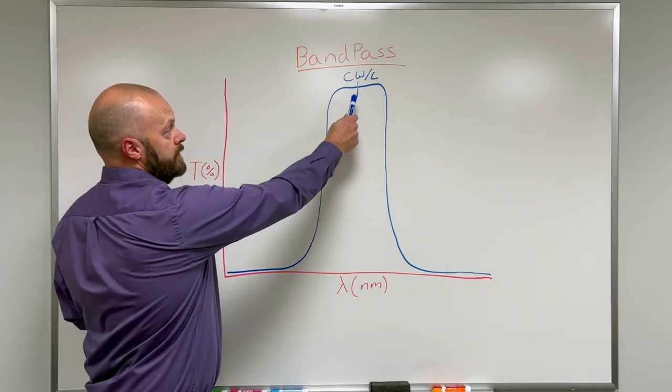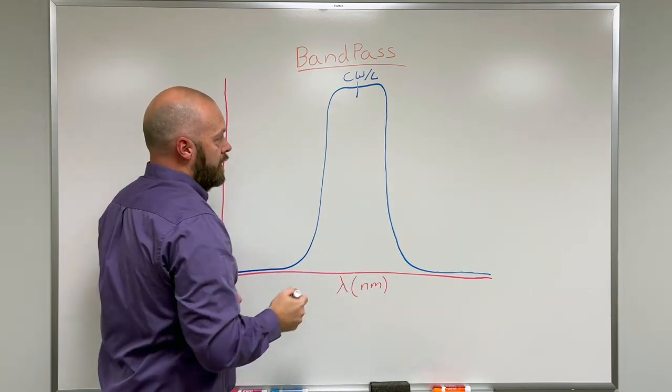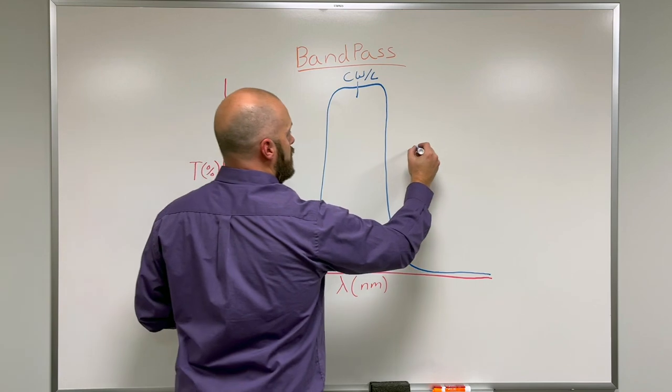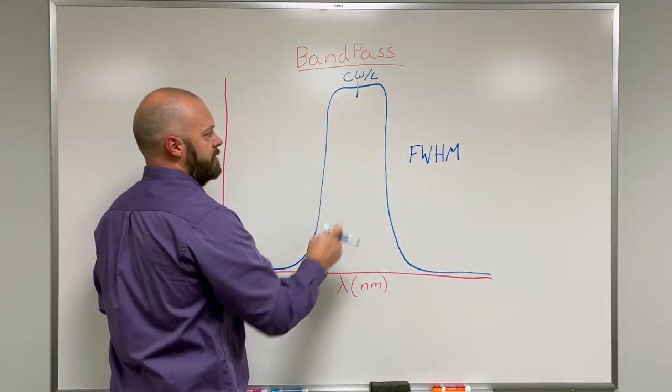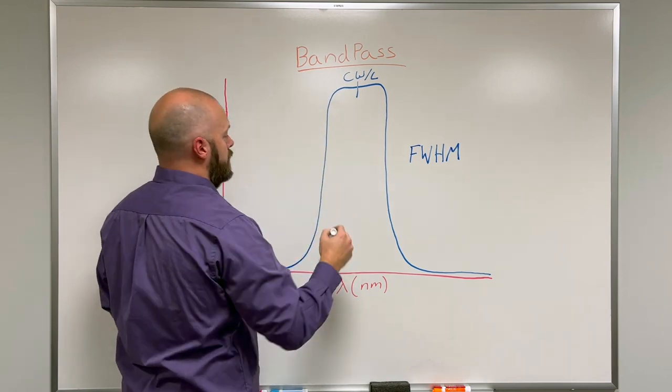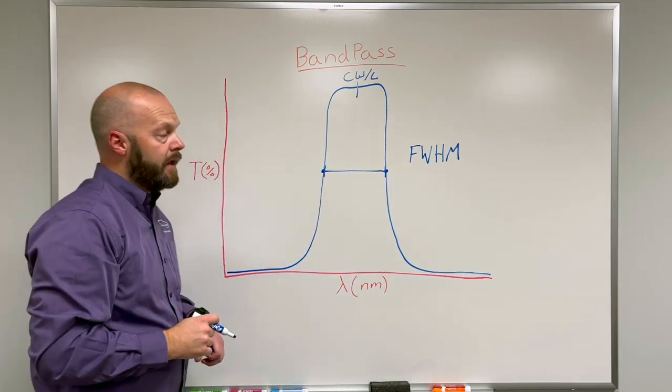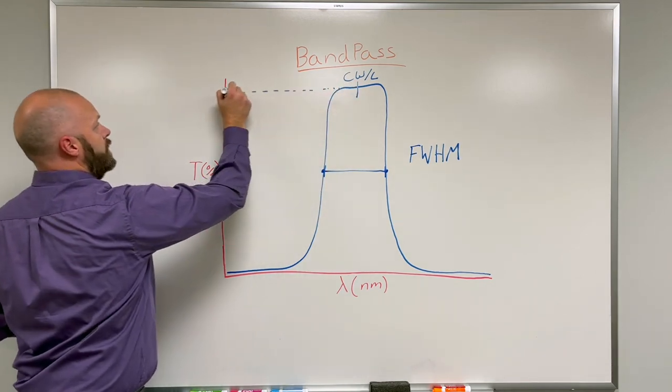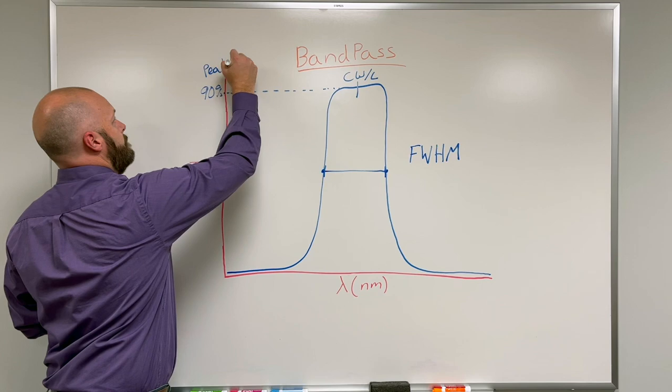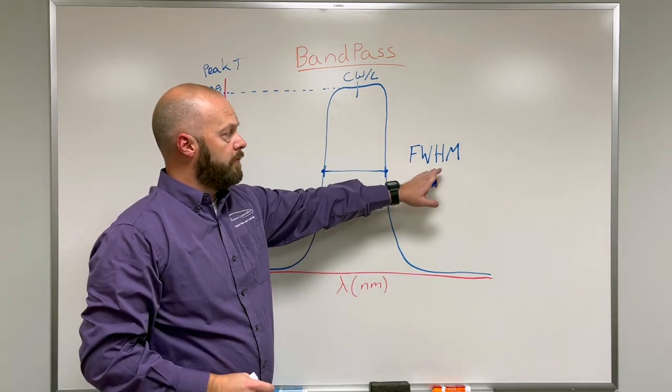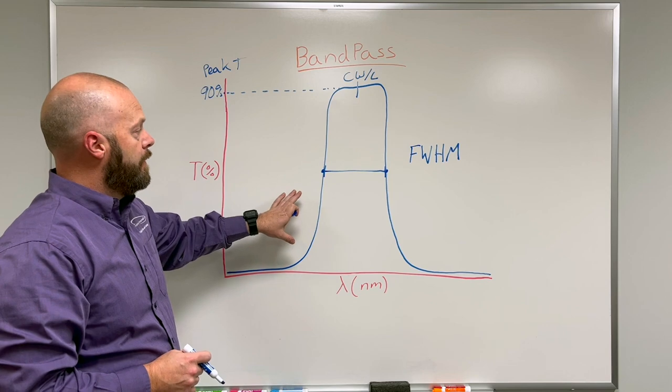First thing, most important, is the center wavelength. That is the center of which the band is going to transmit. And then the next specification, simplest, is called the bandwidth or otherwise known as full width half max. That's the full width at half the peak T, approximately about right here. That'll be your band, and your peak T is extrapolated over here, something like 90% T. So you have your PT transmission, your center wavelength, and your bandwidth or full width half max.